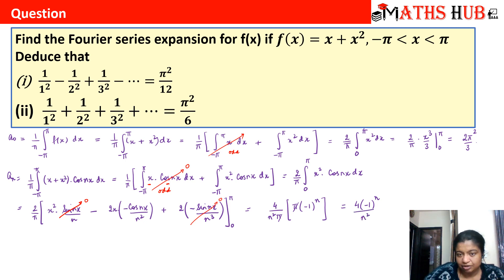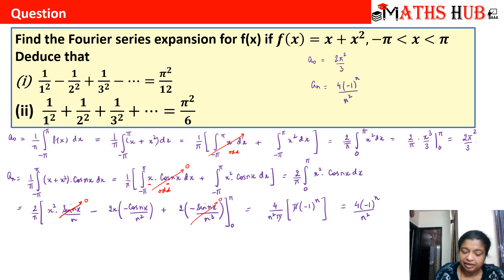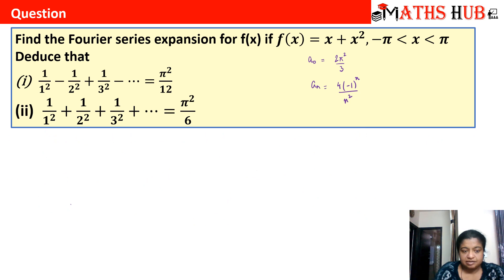Let me note down the coefficients: a₀ = 2π²/3 and aₙ = 4(−1)ⁿ/n². Now we will calculate bₙ.